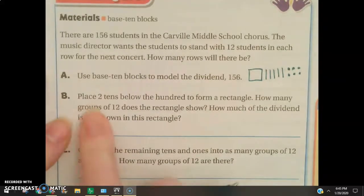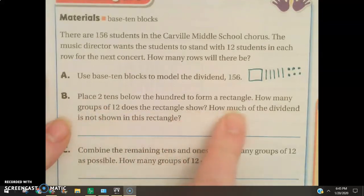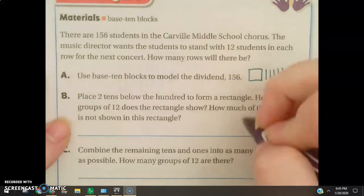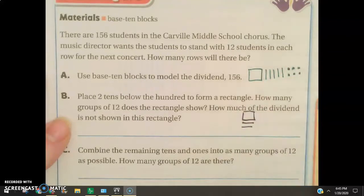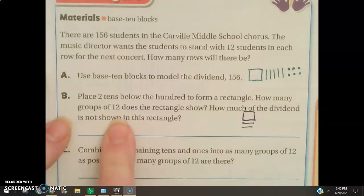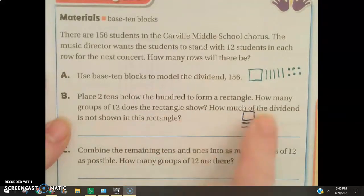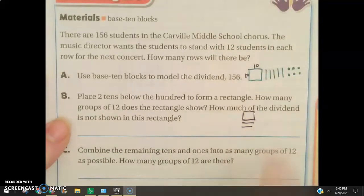Now, it then says, place two tens below the 100 to form a rectangle. So, it's going to look like this. It says, how many groups of 12 does the rectangle show? Well, if this is a 10 by 10 here, that means we now have 10 groups of 12.